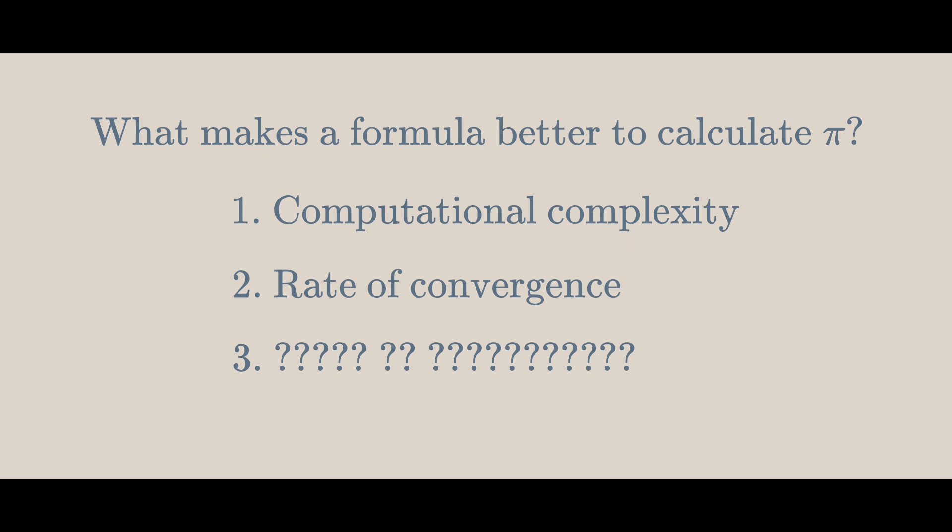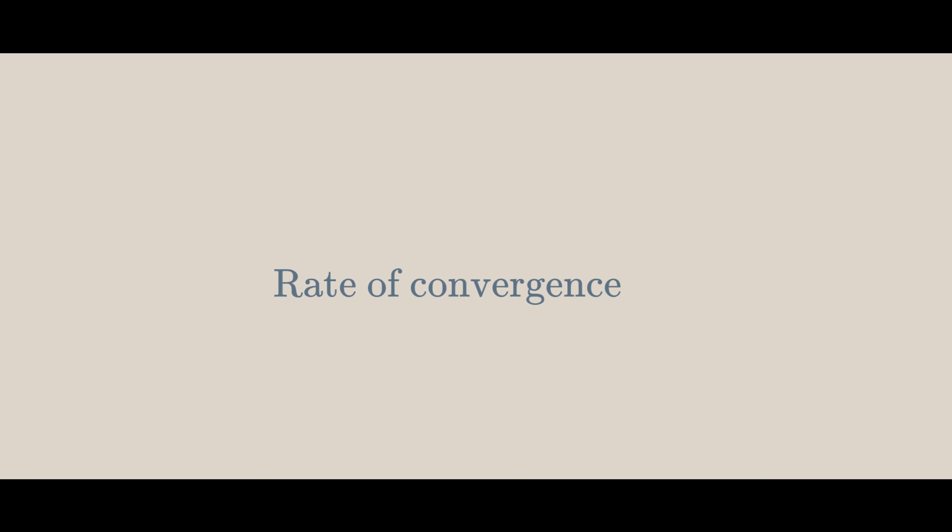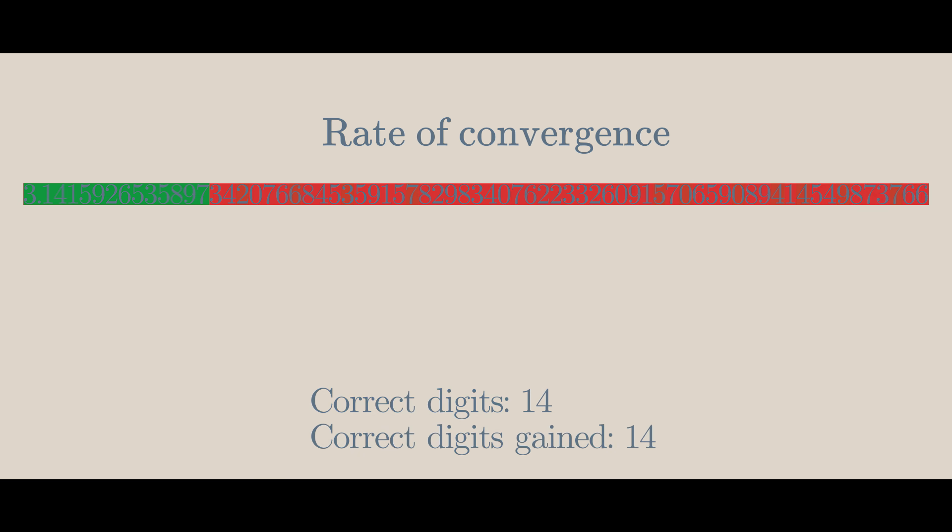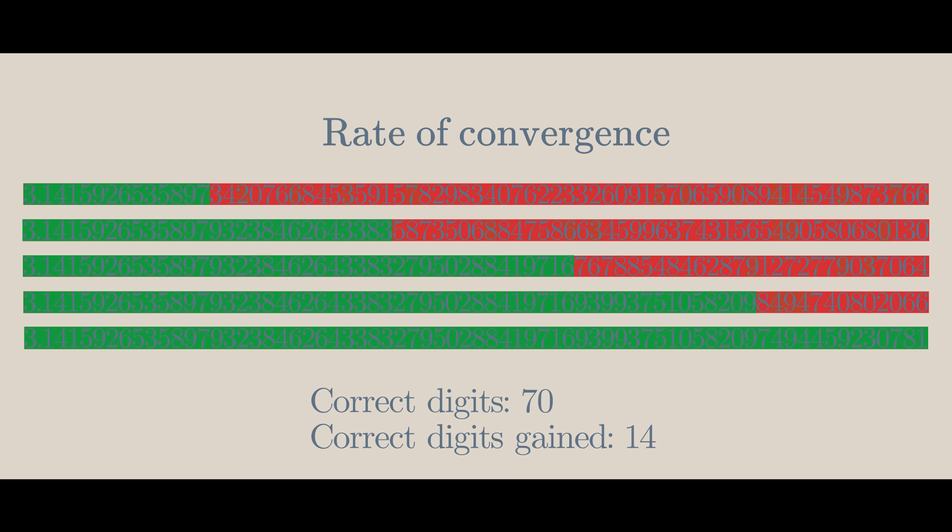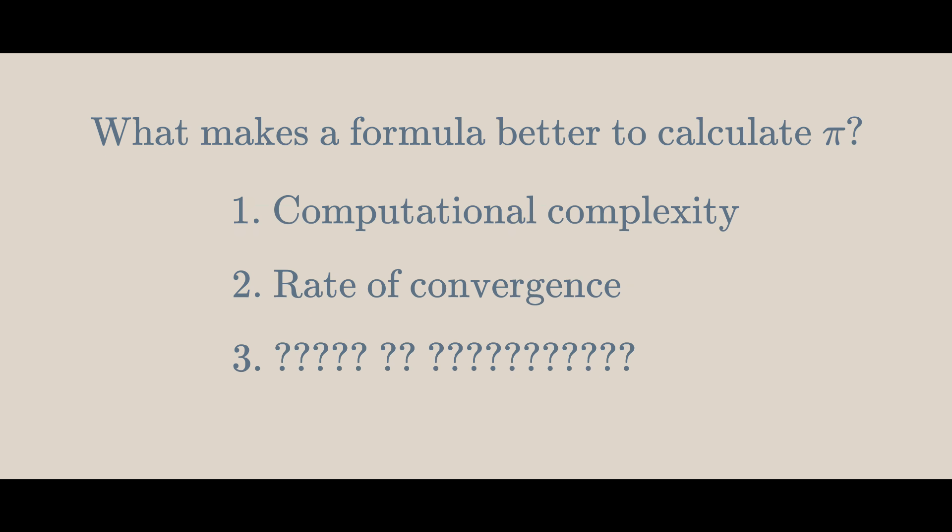In this case, it's how many correct digits of pi are gained per iteration. For example, the Chudnovsky algorithm gains around 14 correct digits per term.